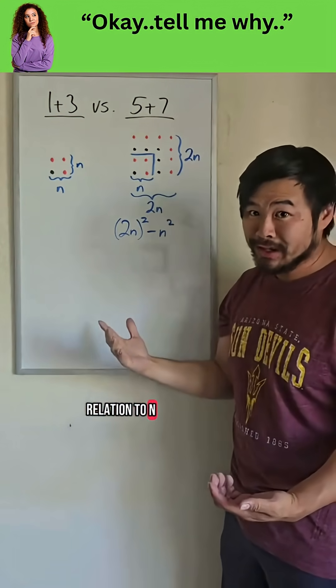So to see what five plus seven is in relation to n, notice that if this is our n by n, we would double each side length. So we have two n by two n. So the area of this shape is two n quantity squared.